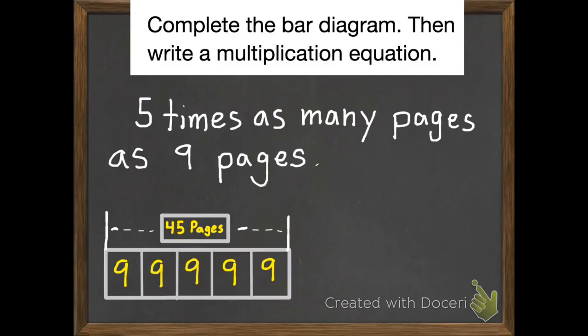There were two parts to our question. So let's complete the bar diagram, which we did. Then write a multiplication equation. So I still need to write my multiplication equation. So I have five times nine. That equals 45.